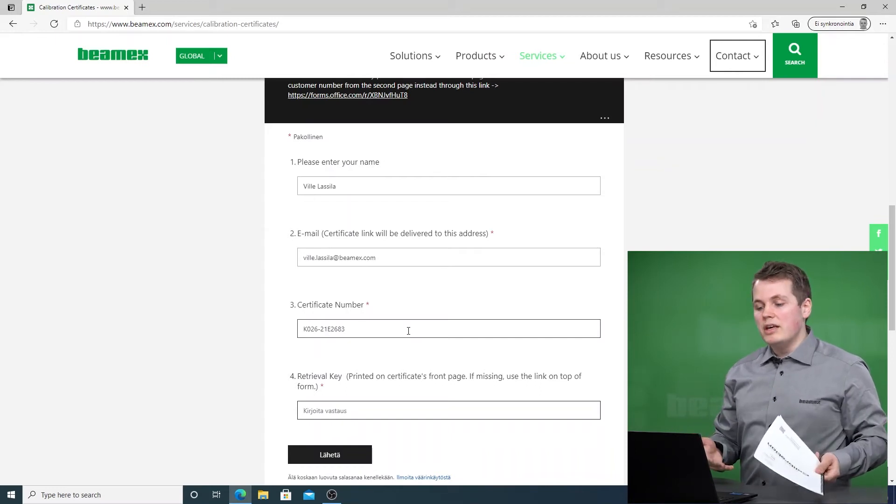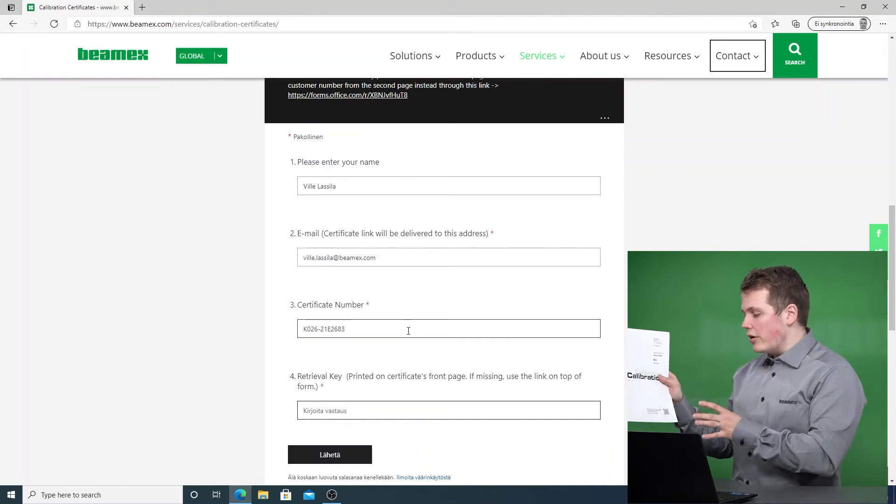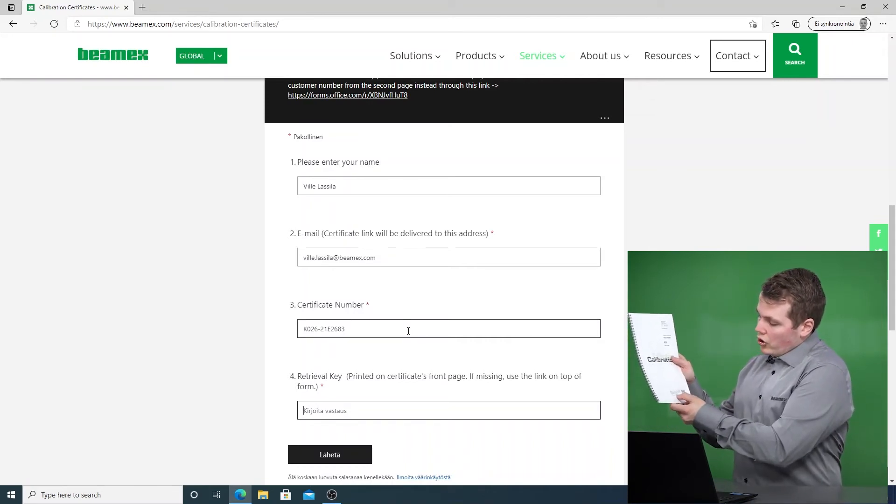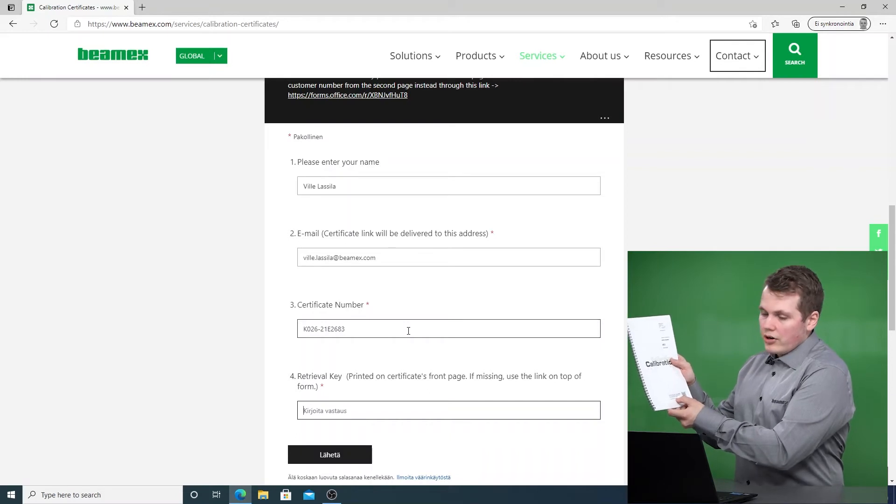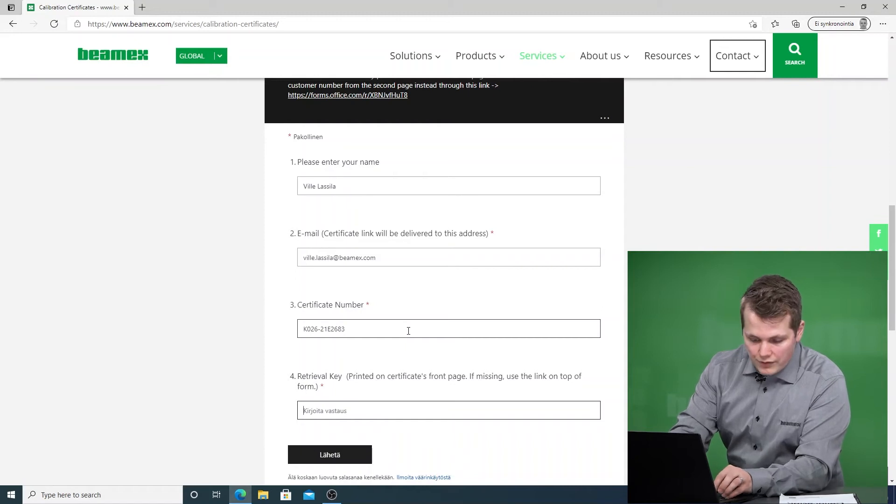This retrieval key is basically there to make sure that you actually have a copy of the certificate right here. So if you look next to your QR code there will be a retrieval key right over here and if you put that into this form it should give you the certificate.